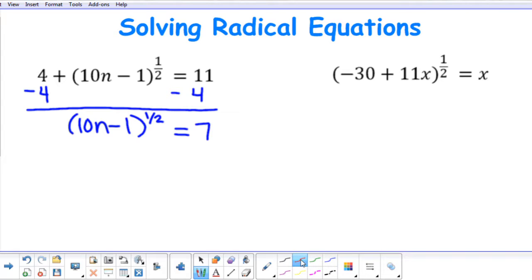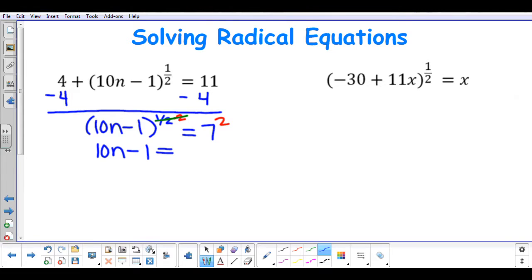So the reciprocal of 1 half will be an exponent of 2, so I will raise both sides of my equation to an exponent of 2. So, 1 half times 2 would end up canceling, just like the exponent of 2 will eliminate a square root, and the 10n subtract 1 will drop down. 7 squared is 49.